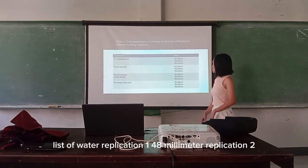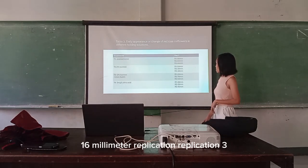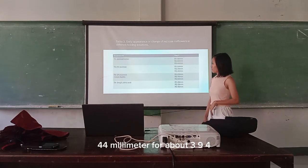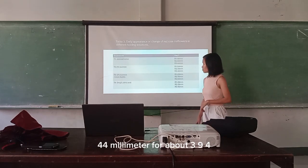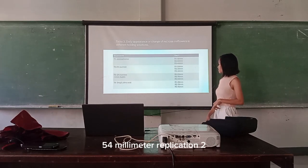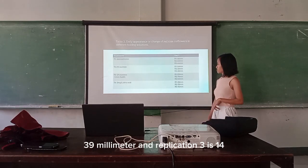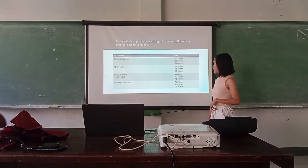Day 1 measurements — Distilled water: Replication 1 is 48 mm, Replication 2 is 60 mm, Replication 3 is 44 mm. For Treatment 2, which is 2% sucrose: Replication 1 is 54 mm, Replication 2 is 39 mm, and Replication 3 is 40 mm.